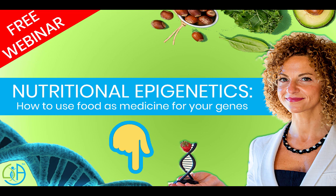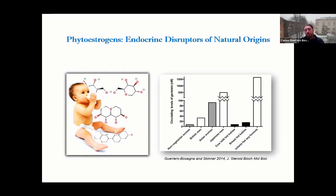The most concerning exposure is not that of adults, but of babies. For example, babies consuming soy formula have an incredible exposure to phytoestrogens, which are endocrine disrupting chemicals.